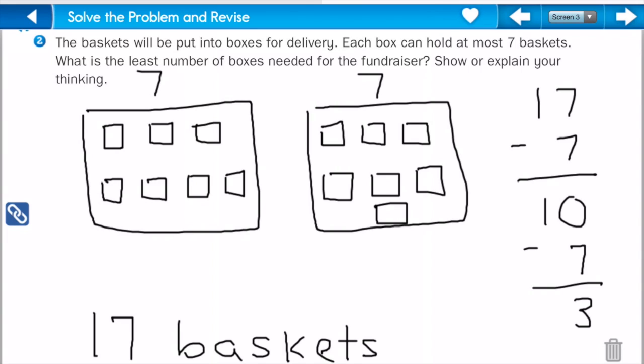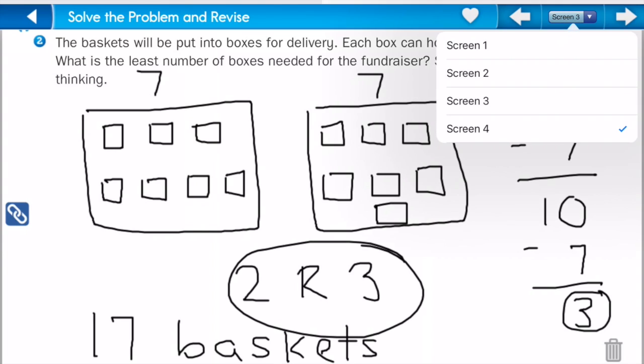So, the least amount that a box is needed for the fundraiser will be 2, right? And then we have 3 left over. So, our answer is going to be 2 with a remainder of 3. So, we need at least 2 boxes, but we'll have 3 left over. Alrighty. I'll let you try this last one.